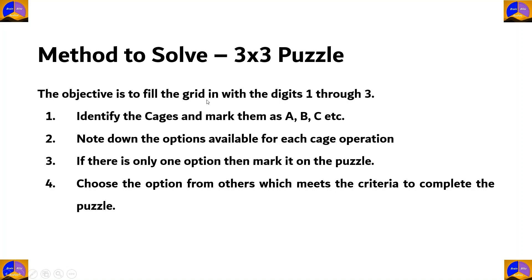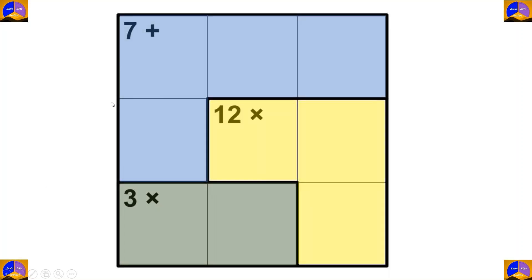The objective is to fill the grid with digits one through three. First, we will identify the cages and mark them as A, B, C, etc. Second, we will note down the options available for each cage operation. Third, if there is only one option, then mark it on the puzzle. Fourth, choose the option from others which meets the criteria to complete the puzzle.